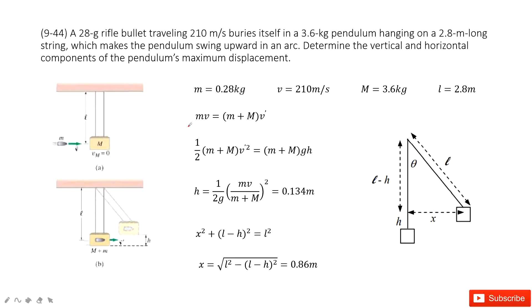Angular momentum is conserved when the bullet hits the box. Then the bullet is inside the box and this box will move up — there the energy is conserved. Initial kinetic energy equals the final potential energy.